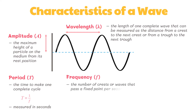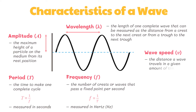Frequency refers to the number of crests, or waves, that pass a fixed point per second. One hertz is equal to one wave per second. The formula for frequency is the inverse of the period. It is measured in hertz, named after German physicist Heinrich Hertz. Wave speed is the distance a wave travels in a given amount of time, and is equal to wavelength multiplied by its frequency. The SI unit for wave speed is meters per second.